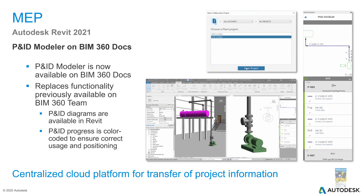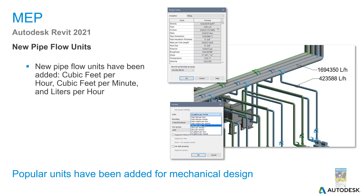For those working with P&ID, the P&ID modeler is now on BIM 360 Docs, replacing the previously available functionality on BIM 360 Team. P&ID diagrams are available in Revit, with progress color-coded for current usage and positioning. New pipe flow units have also been added: cubic feet per hour, cubic feet per minute, and liters per hour.